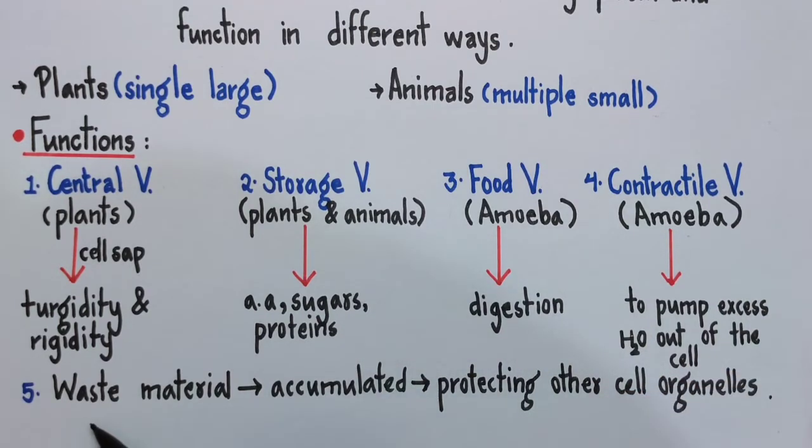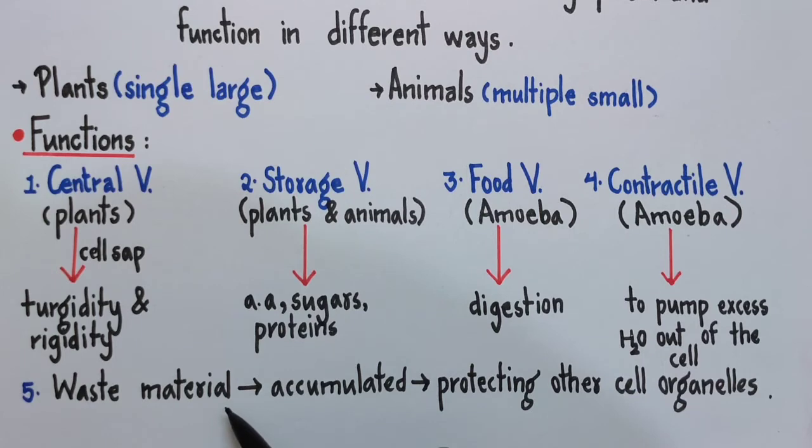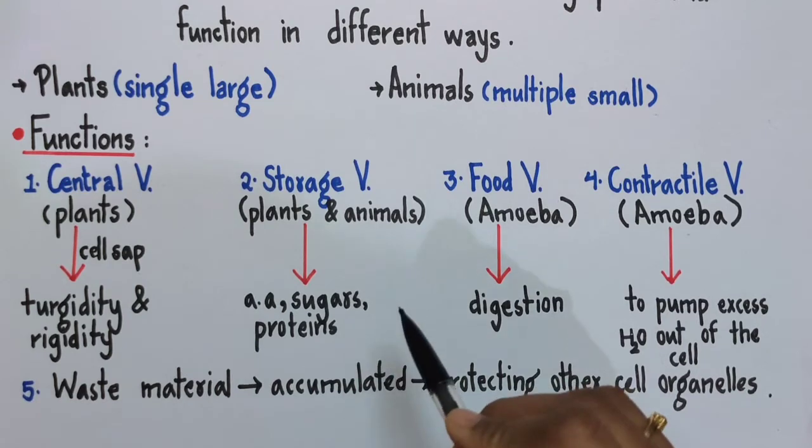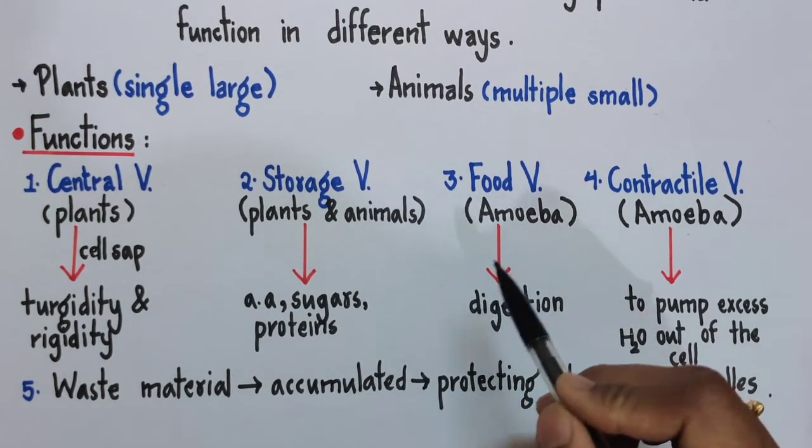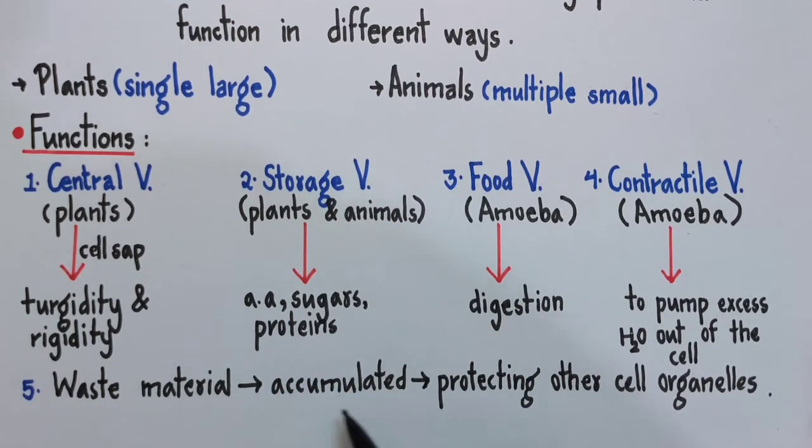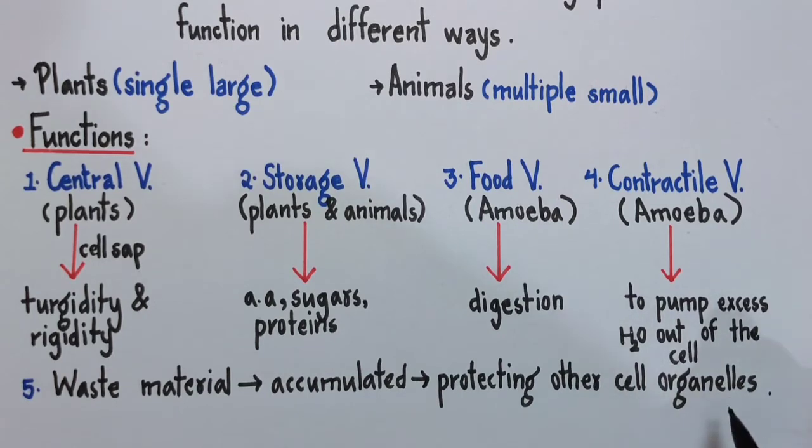There is one more important function of vacuoles that is seen mostly in case of plants. We know that plants lack any kind of excretory system, but even in plant cells, a lot of waste is generated. So all that waste material gets accumulated in vacuoles, thereby protecting the other cell organelles.